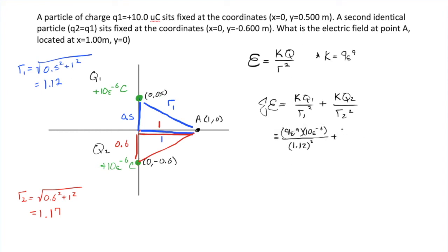And then we'll just have the other slightly different version of this. That's 10 times 10 to the negative 6 over 1.17 squared.